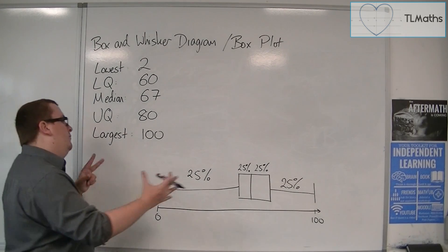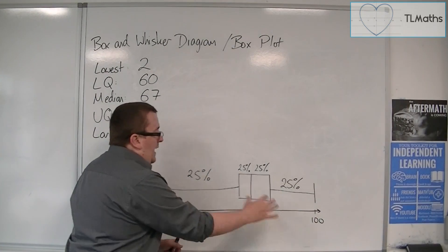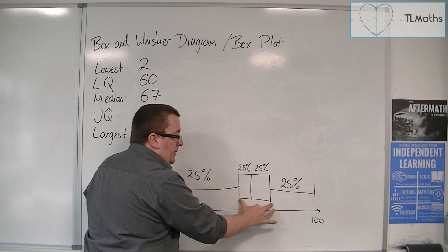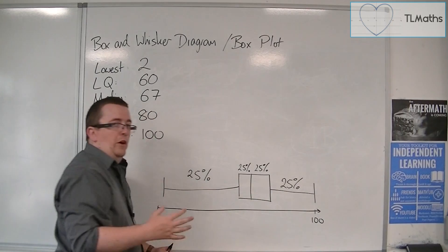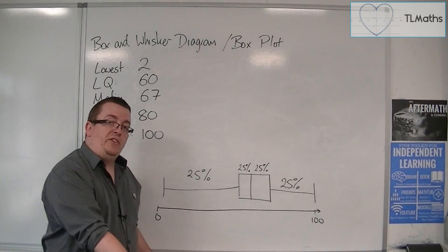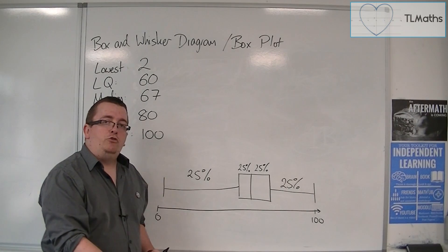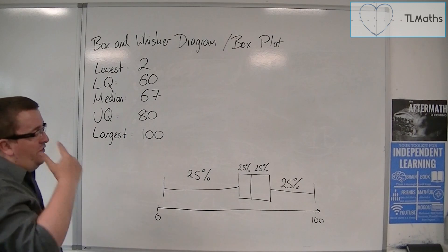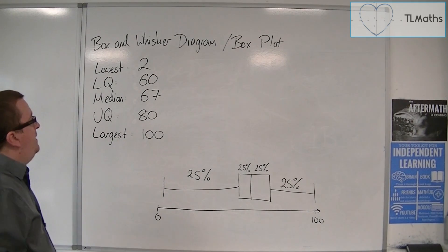So that is how you can see the data spread out. And you can see that 50% of the data is between the lower quartile and upper quartile, squeezed between those two points. So it gives you a visual representation of how that data is spread out. Now, it's particularly effective if you have two sets of data and you want to compare them.